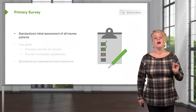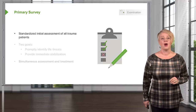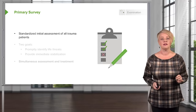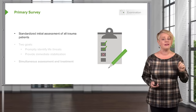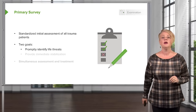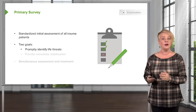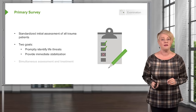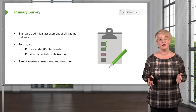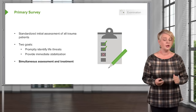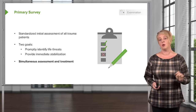Now we're going to talk about the overall approach to the traumatically injured patient. Management of trauma always begins with a primary survey. The primary survey is a standardized way of performing your initial assessment of all trauma patients, and it should be done exactly the same way every single time in every single case so you don't miss anything. There are two major goals: one is to identify life threats quickly, and two is to provide stabilization when life threats are identified. It's very important to remember that the primary survey isn't just about diagnosis — it involves simultaneous assessment and treatment of the patient.